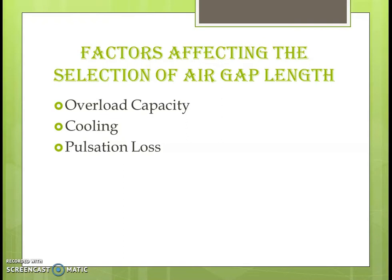In the case of pulsation loss, because of the slotting effect, we have an irregular or non-uniform air gap length and variation in leakage reluctance. Because of this, we have higher pulsation loss. So simply by keeping a larger air gap length, the variation in the reluctance of the air gap is reduced and ultimately we have less pulsation loss. The last factor is noise. Noise is caused by leakage flux or zigzag leakage flux between the air gap. If we increase the air gap length, the zigzag leakage flux will reduce and the motor will run with very little noise.